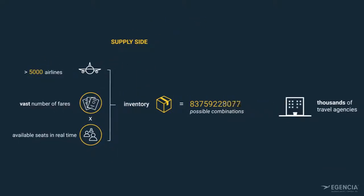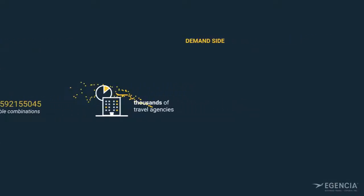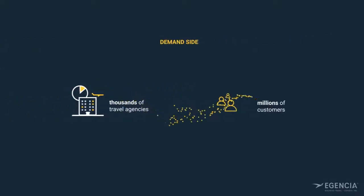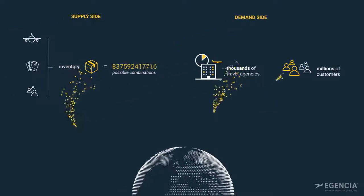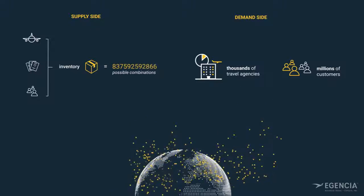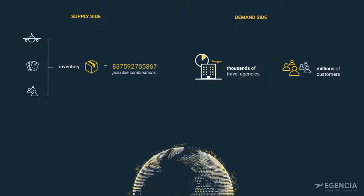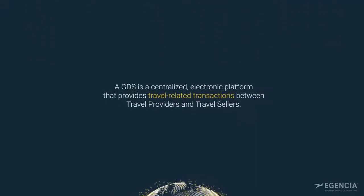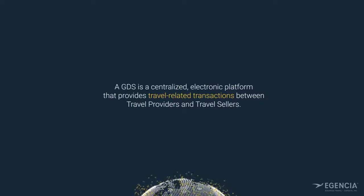On the demand side, there are thousands of travel agencies. Those travel agencies in turn sell travel to millions of customers every day. Global distribution systems, or GDS, have to connect these vast volumes of supply and demand in an increasingly automated and fast way.